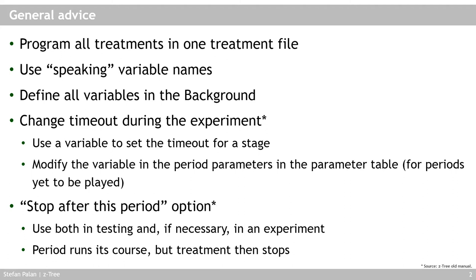I like to use speaking variable names. If you have variables like x1 through x17, you will have no idea what they are for when you come back to your code. If instead you call them something like 'contribution' or 'isProposal,' you already know what is in them just by looking. This makes the code much easier to read, and the small cost of typing longer names is worth the increase in transparency.